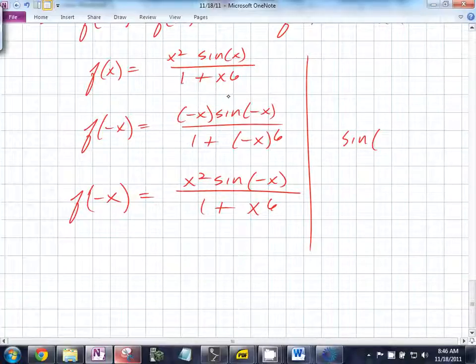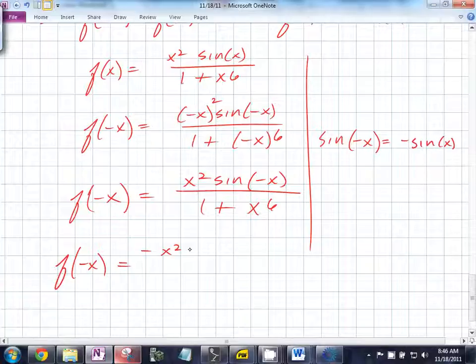What does sine of negative x equal? It equals negative sine of x. If you take the opposite, it does equal that. So therefore, f of negative x is equal to negative x squared sine of x all over 1 plus x to the six, which is equal to negative the original function. Therefore, f of x is odd.